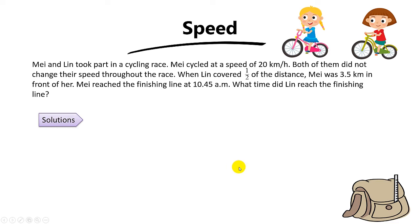Hi everyone, let's go through this question on speed. This question is actually from the past PSLE math paper and I found it to be pretty challenging. So let's go through this: May and Ling take part in a cycling race. May cycles at a speed of 20 kilometers per hour. Both of them did not change their speed throughout the race.